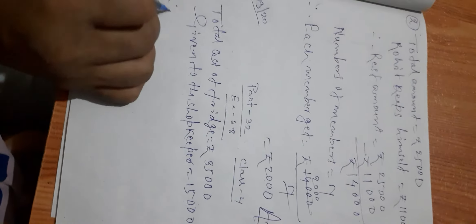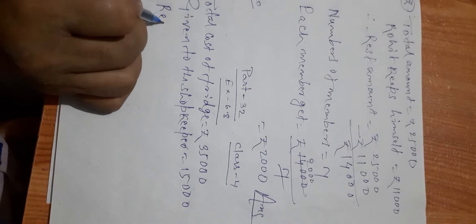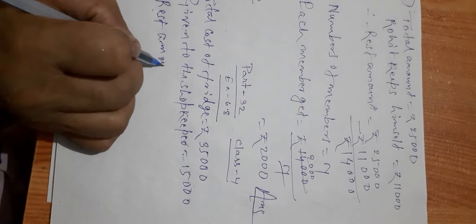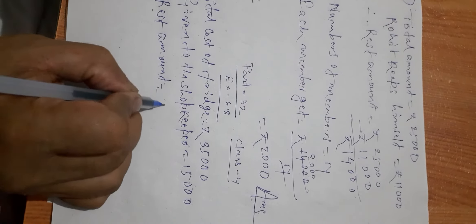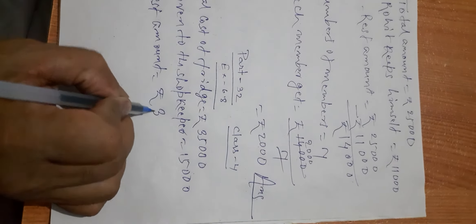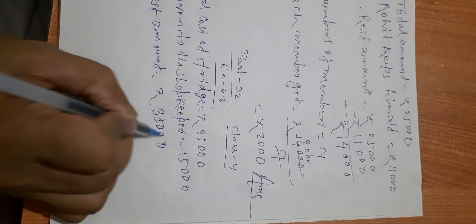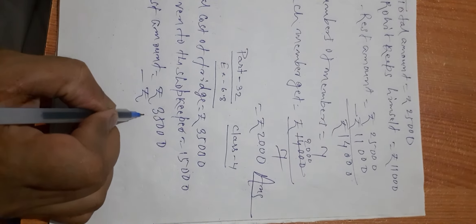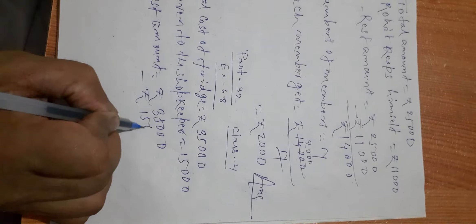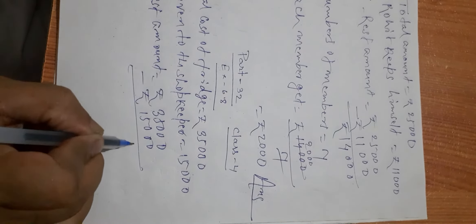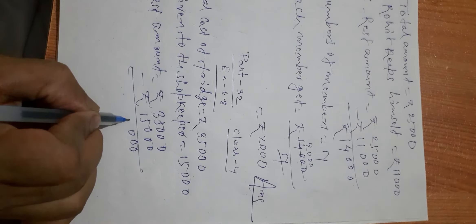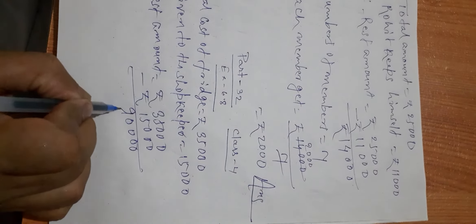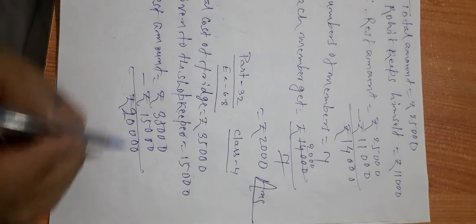Therefore, the rest amount is equal to 35,000 minus 15,000, which is equal to 20,000.